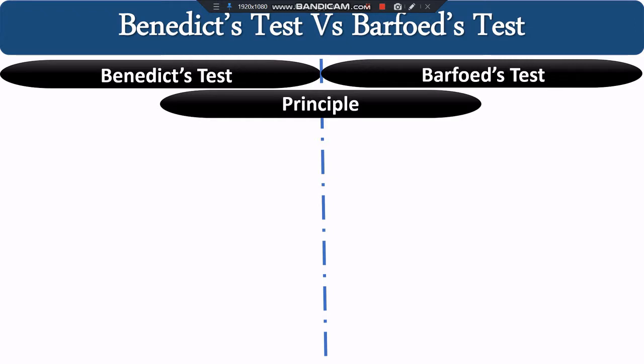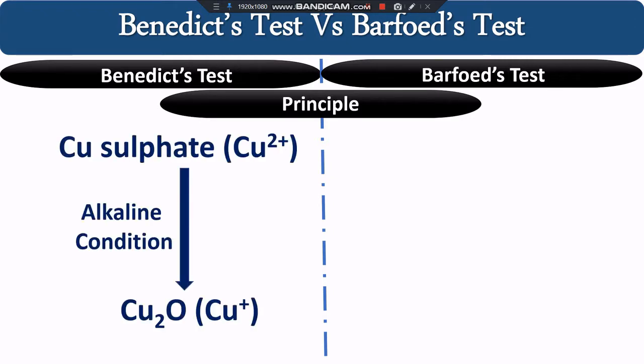First we will look at the principle for the Benedict test and the Barfoed test. In the Benedict test we use Benedict reagent, and in the Barfoed test we use Barfoed reagent. In the Benedict test, copper sulfate is the source of copper, which provides Cu²⁺ ions. In alkaline conditions, Cu²⁺ is ultimately reduced to Cu⁺, that is cuprous oxide. The color of copper sulfate is blue, while the color of cuprous oxide is a brick red precipitate.